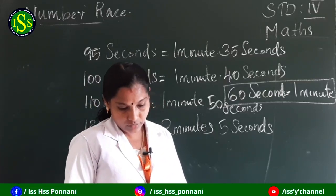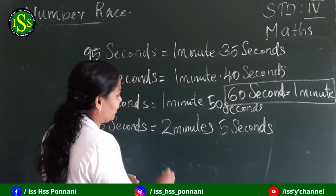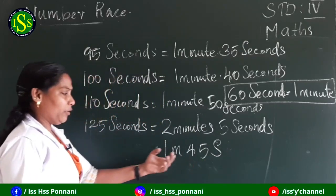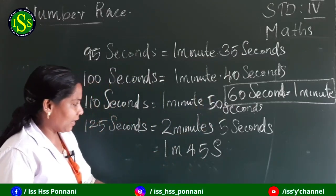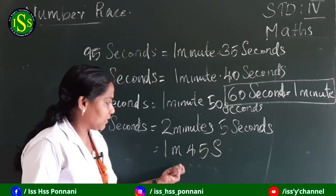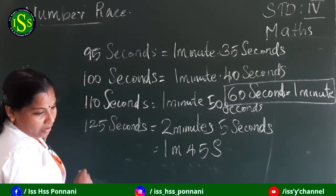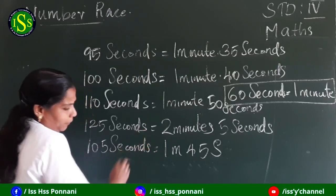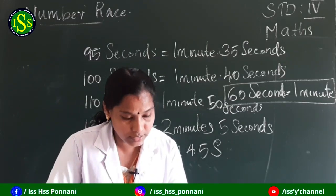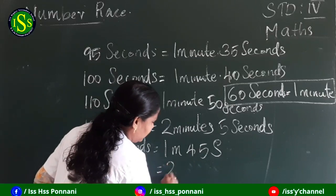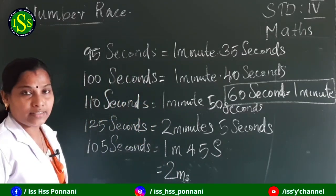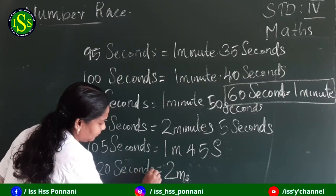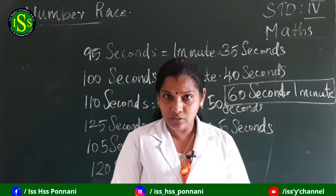Next: 1 minute 45 seconds. 60 seconds plus 45 seconds gives a total of 105 seconds. The last one: 2 minutes equals 120 seconds. Okay, all of you understood? Very good.